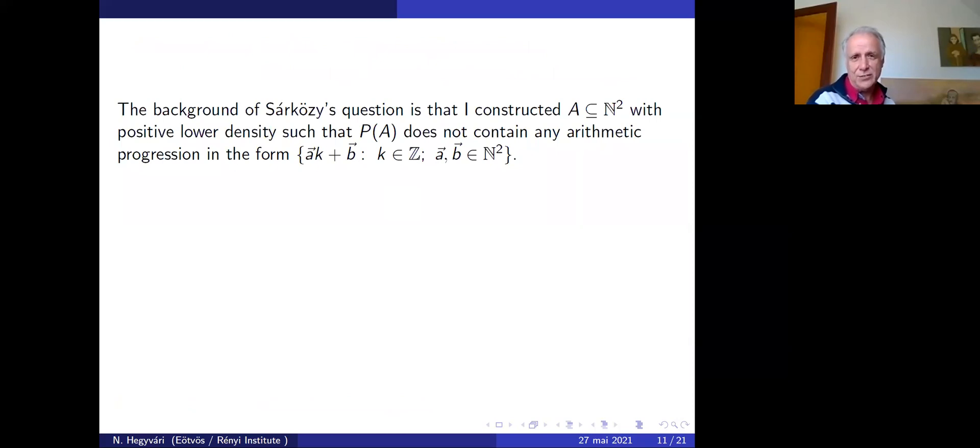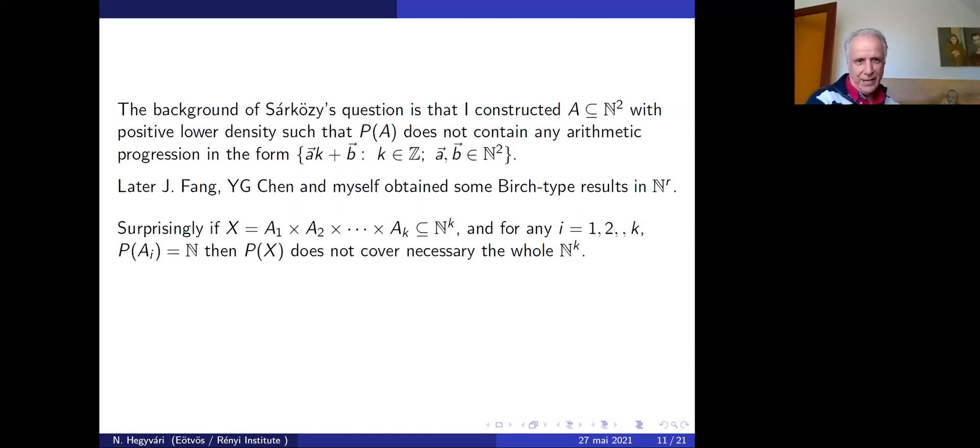The background was that Guy constructed a subset of the two-dimensional integer lattice with positive lower density such that P(A) does not contain an arithmetic progression with equidistributed points. There is a completely different structure in higher dimensions. With Chen Hung and Dongo Chen, we obtained some Birch-type results.